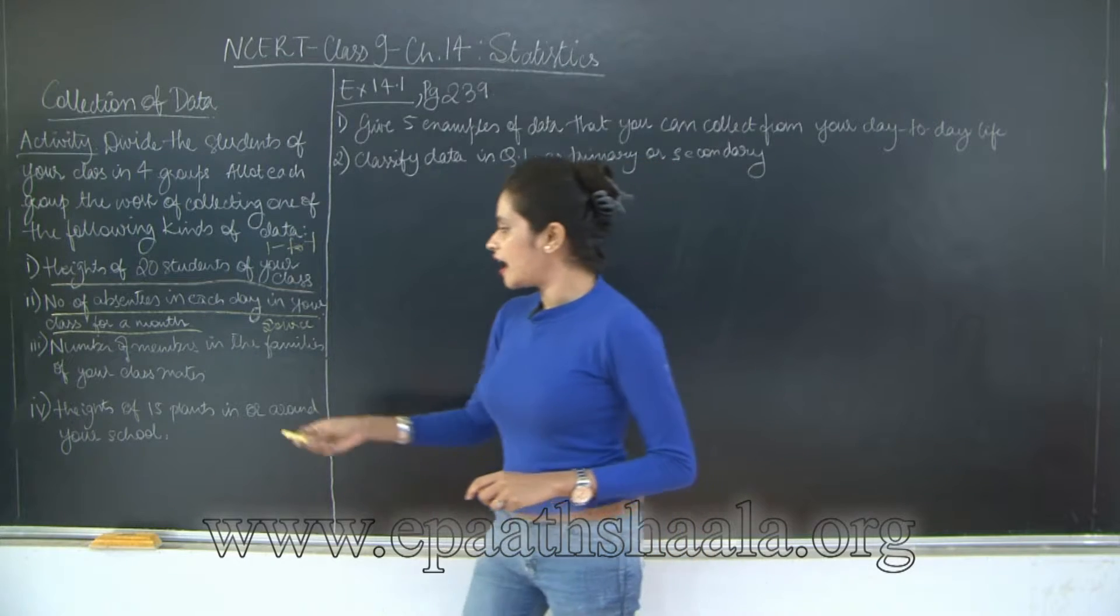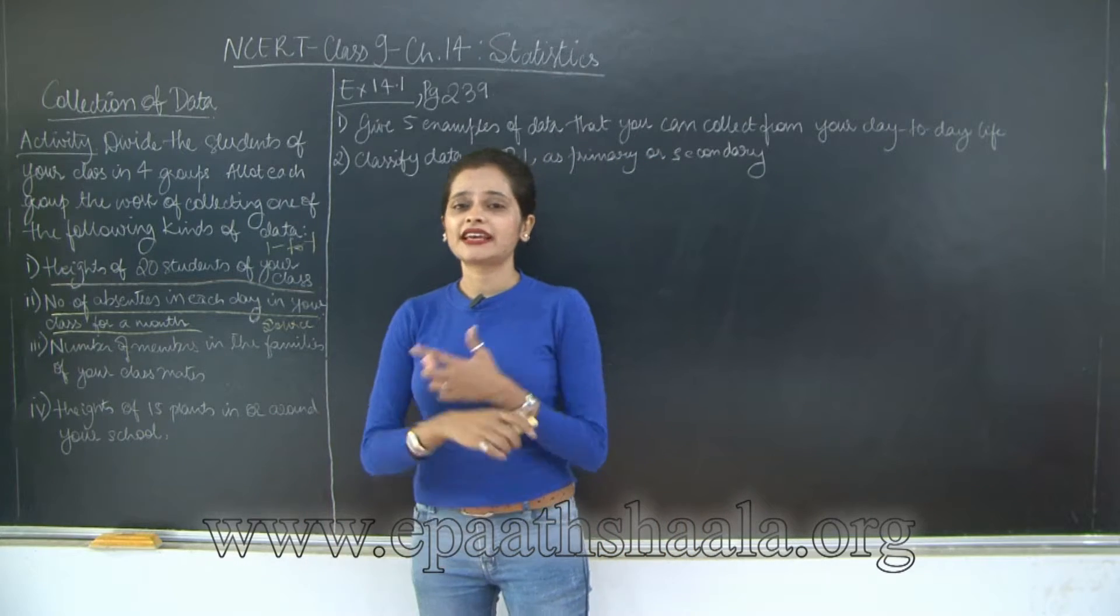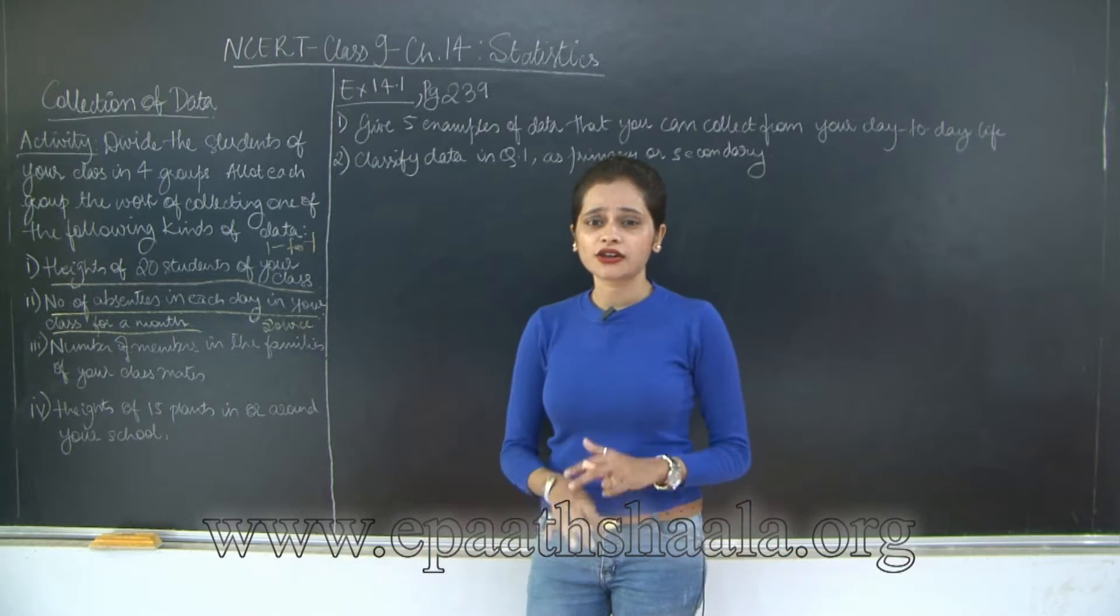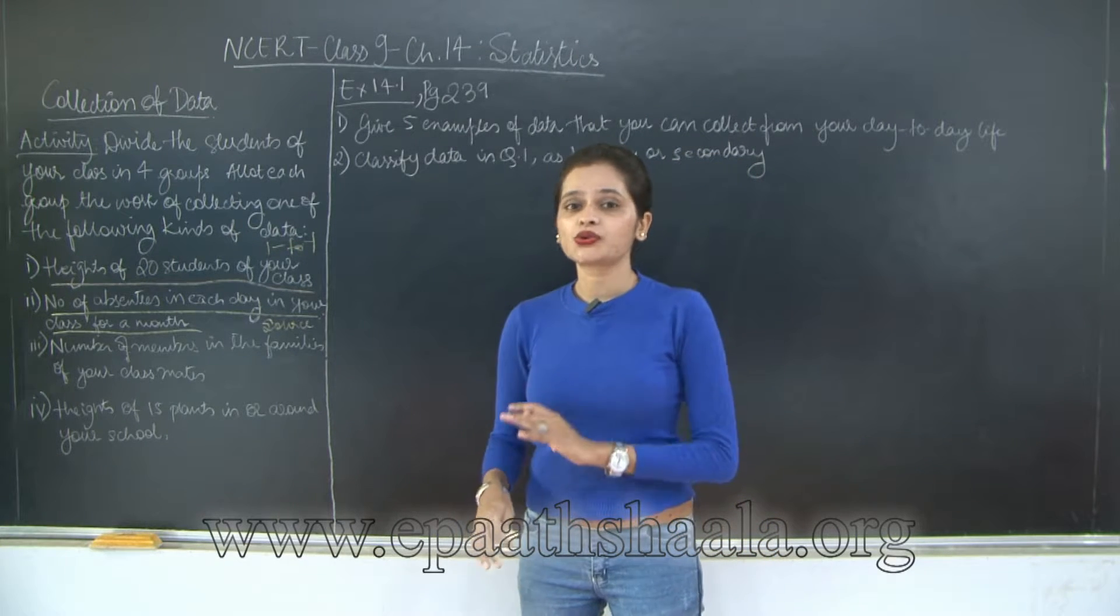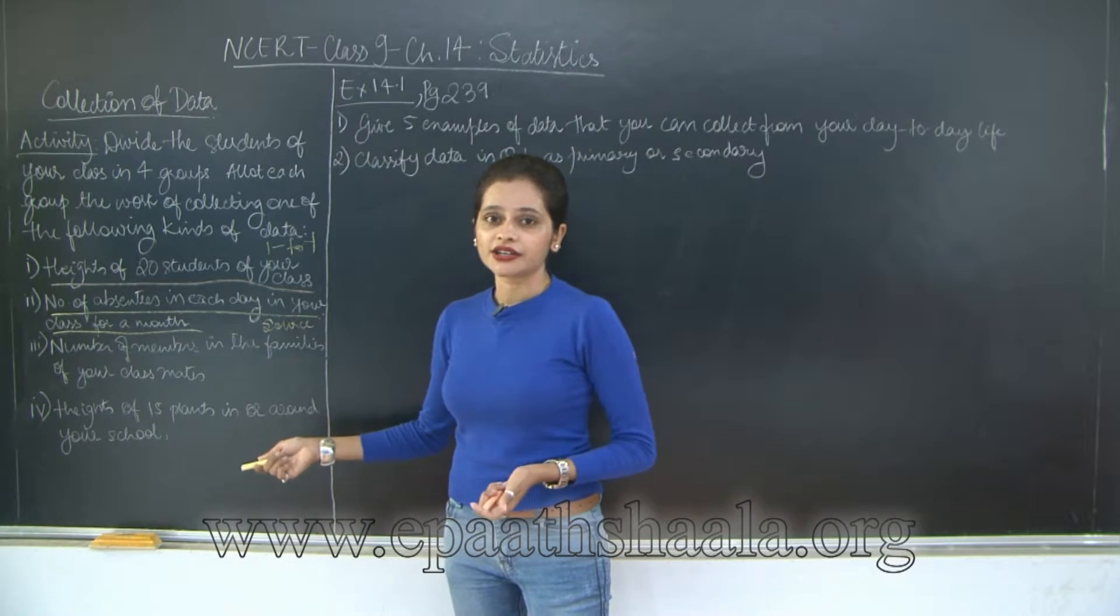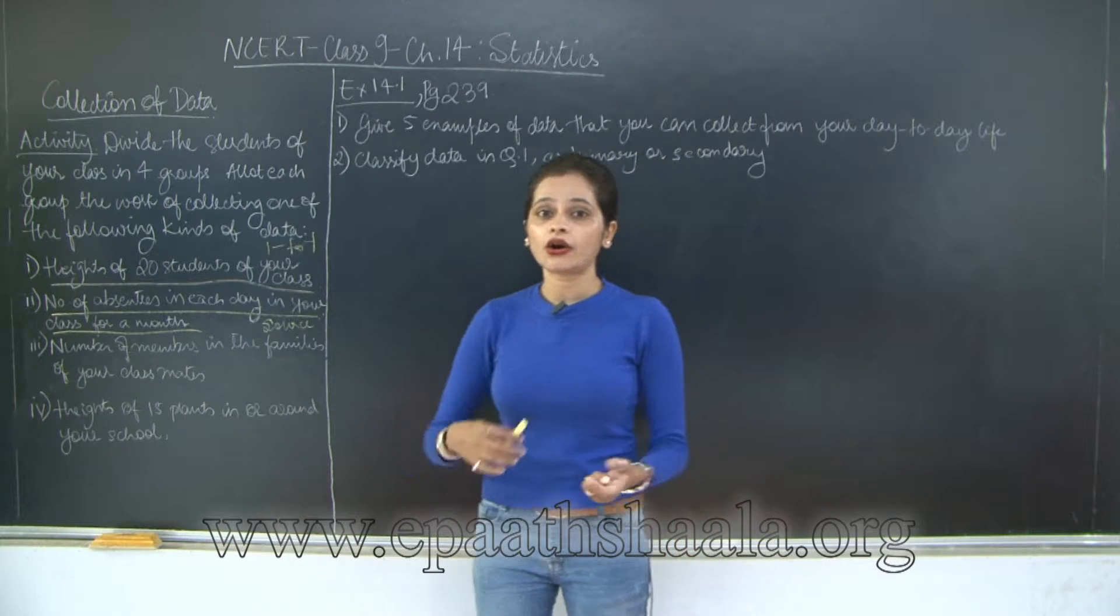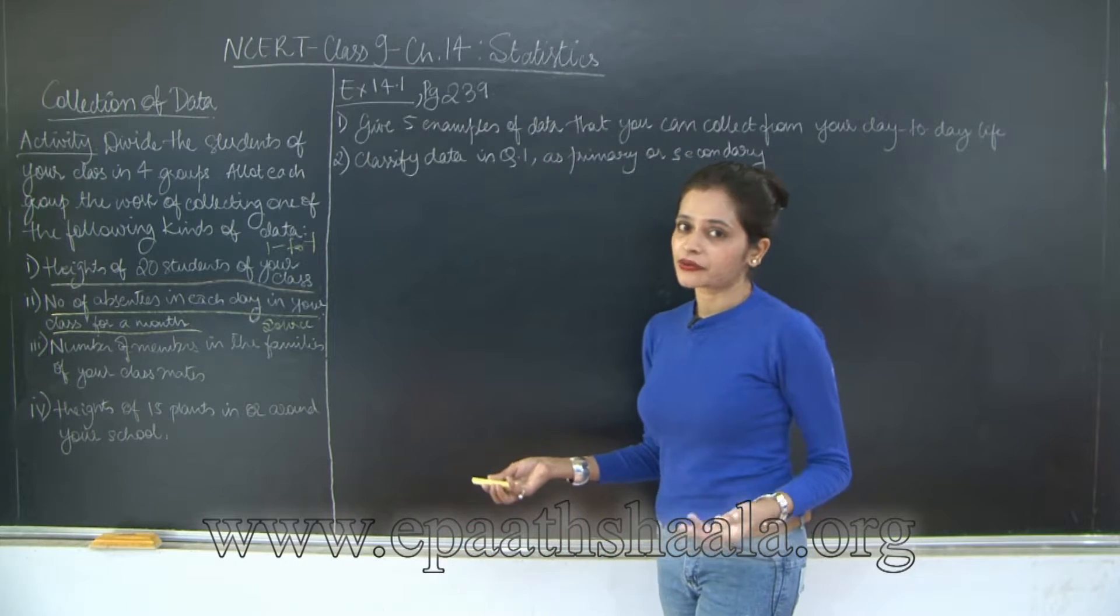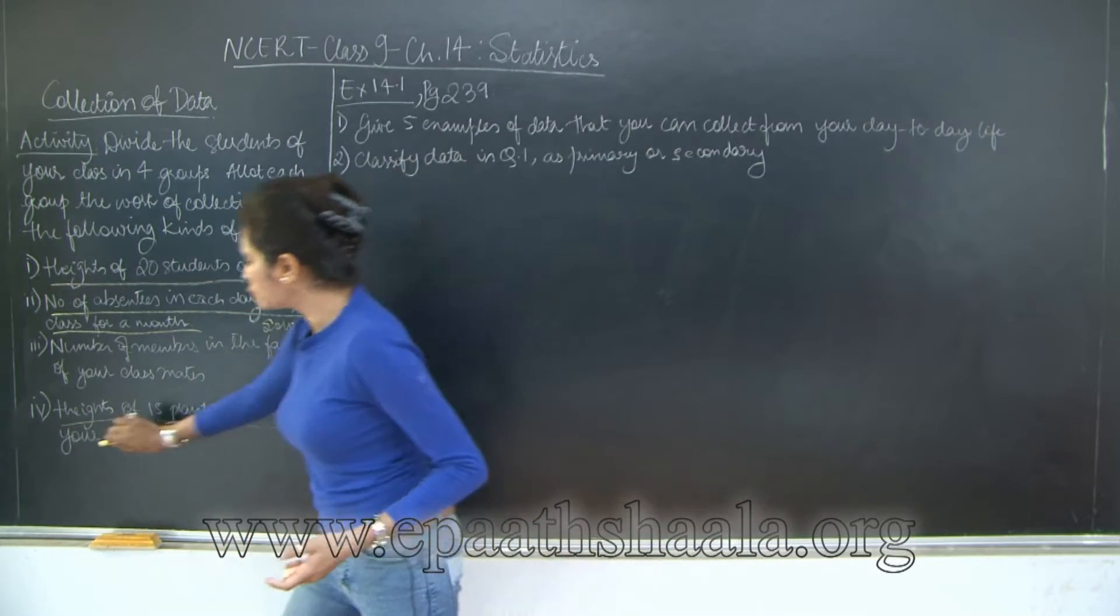Now let's move on to the fourth one: heights of 15 plants in or around your school. Do you think this is possible? In my school, I remember there were huge trees and thousands of plants, a lot of greenery. Believe me, even if there would have been a group of 20 students, it wouldn't be possible for us to go manually and check the height of each plant. I would have or the group would have gone to the gardener and asked for this information. So what is happening here is the students are not going on a one-to-one basis to measure the heights of the plants, but they are going to collect it from the gardener or caretaker. So what is happening here is again there is a source involved.